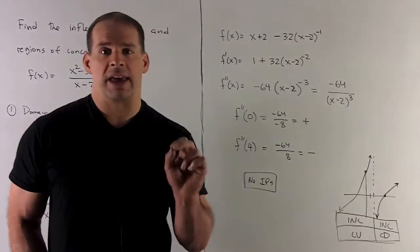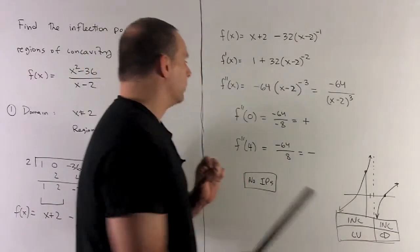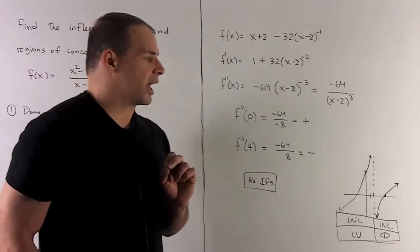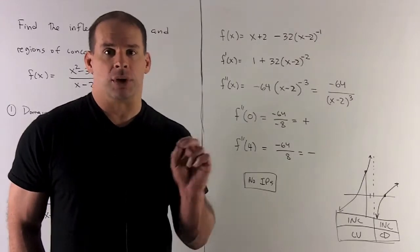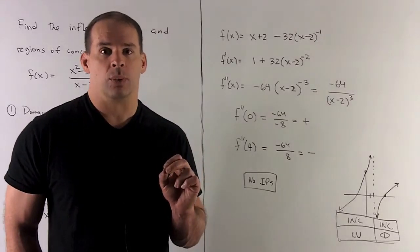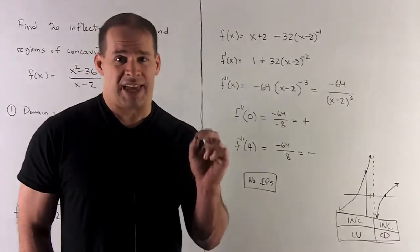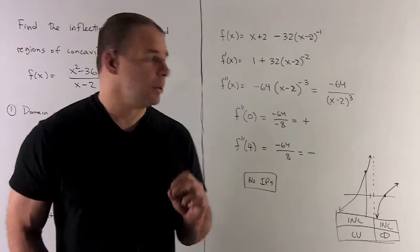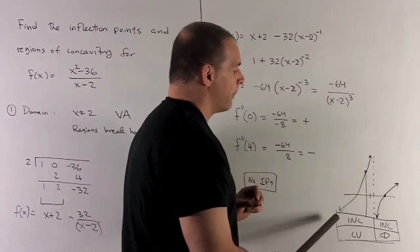So let's figure out the concavity on each side of the asymptote. We're going to check one point on each side. I'll use 0 and 4. If I put 0 into the second derivative, what happens? We're looking at -64/-8, which is 8. So we're going to be concave up on this region. And if you note, our function bears that out.